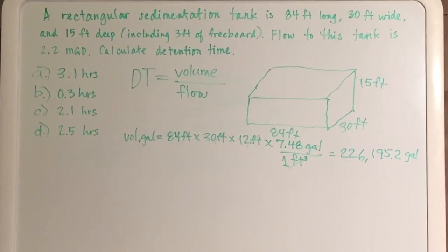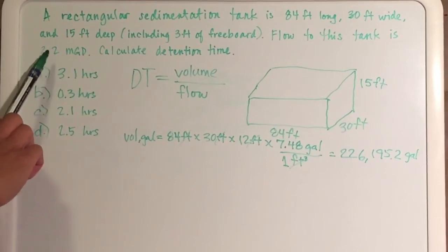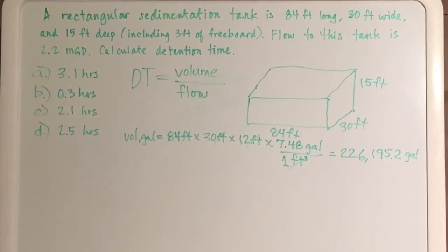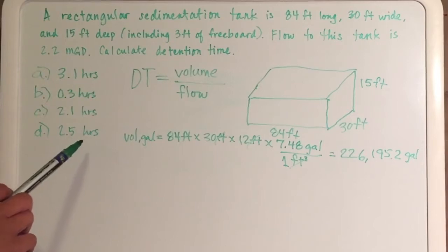Now you're going to determine your flow. You're already given your flow as 2.2 million gallons per day, but the answer is looking for hours.